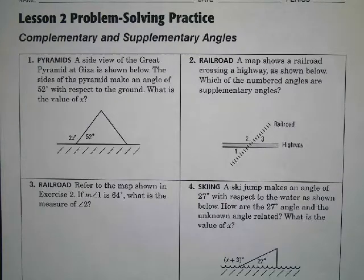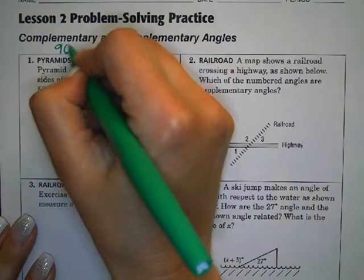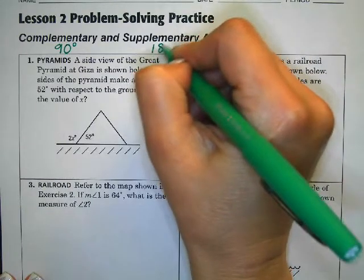We're going through some problems on complementary and supplementary angles. Remember that complementary angles add up to 90 degrees, whereas supplementary angles add up to 180 degrees.